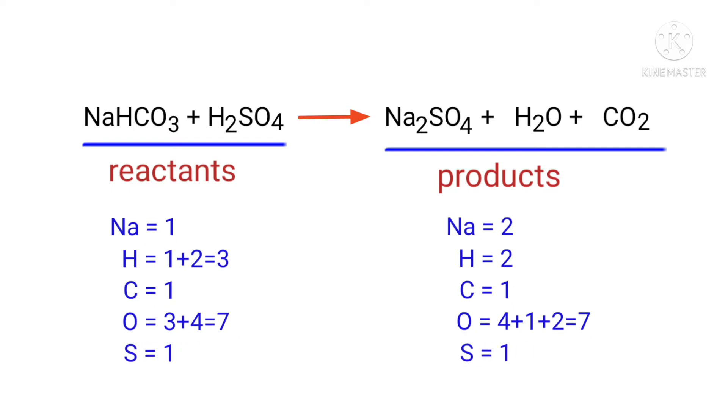If you look at this equation, it is not balanced. On the reactants side there are 1 sodium atom, 3 hydrogen atoms, 1 carbon atom, 7 oxygen atoms, and 1 sulfur atom. On the products side there are 2 sodium atoms, 2 hydrogen atoms, 1 carbon atom, 7 oxygen atoms, and 1 sulfur atom.